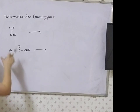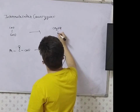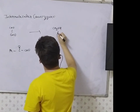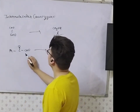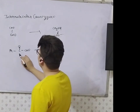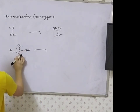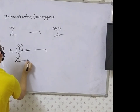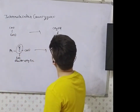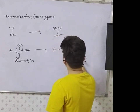Next, we see the intramolecular Cannizzaro reaction. In this, one molecule of the dialdehyde oxidizes and one molecule reduces. The more electrophilic group oxidizes to the acid and the less electrophilic reduces to the alcohol. Since ketone is less electrophilic, the product is PhCH(OH)COO⁻.